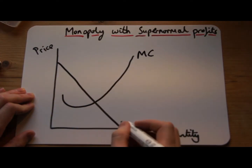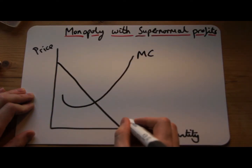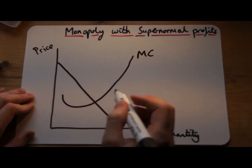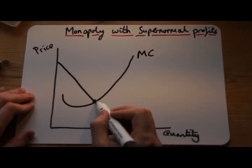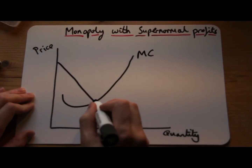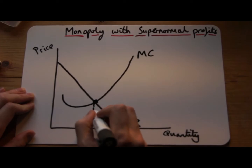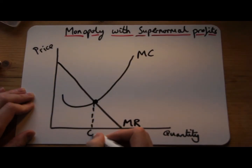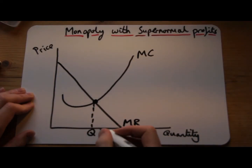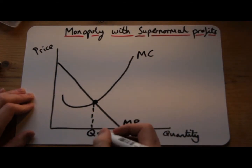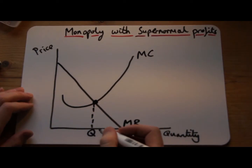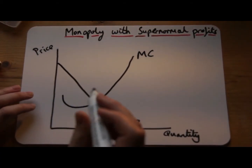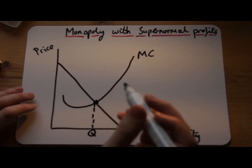I always like to draw those two first because then I can show the profit-maximising point and the profit-maximising quantity, and I can already show that on my graph.